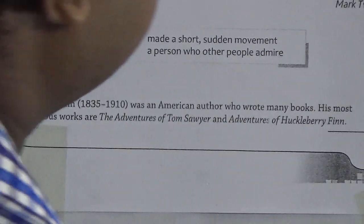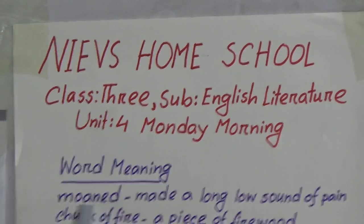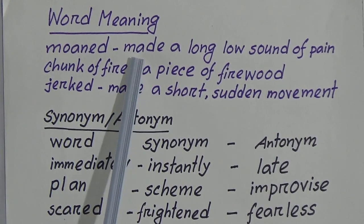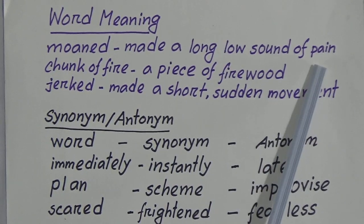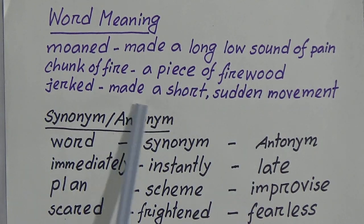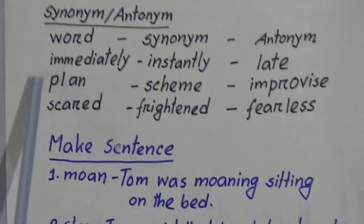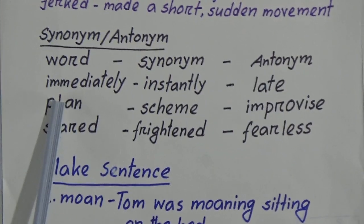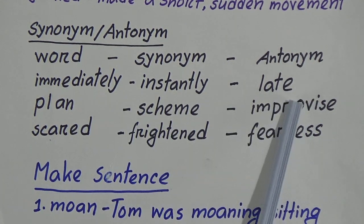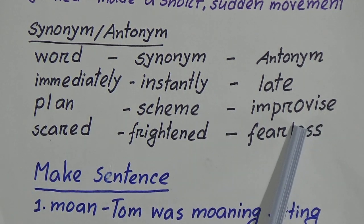Now we will look at the word meanings. 'Moaned' means made a long low sound of pain. 'Tongue of fire' means a piece of firewood. 'Jerk' means made a short sudden movement. Now we will look at synonyms and antonyms. 'Immediately' means quickly; synonym is 'instantly' and antonym is 'late.' 'Plan': synonym is 'scheme,' antonym is 'improvise.'